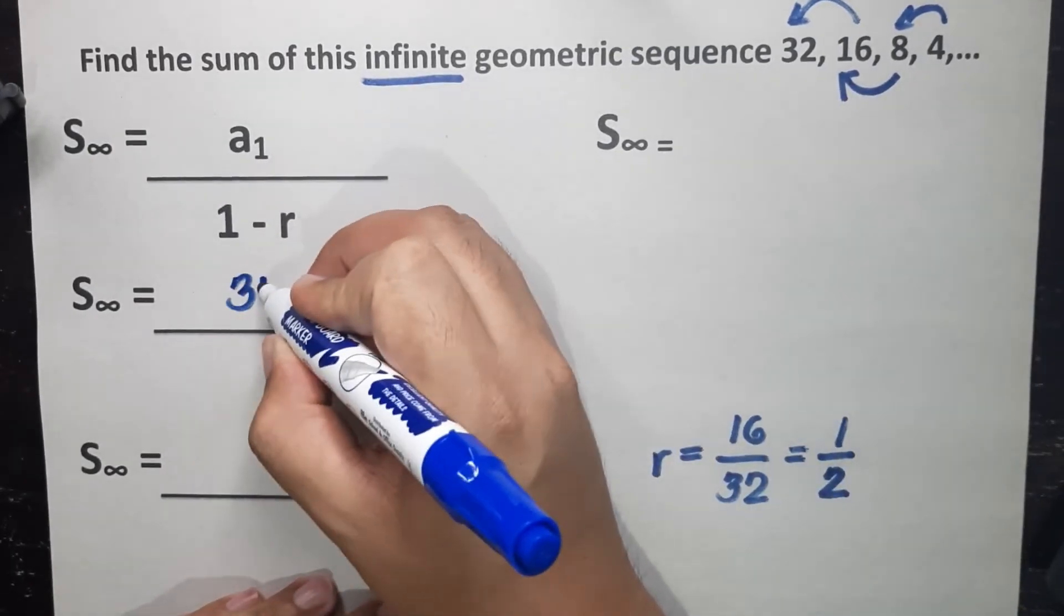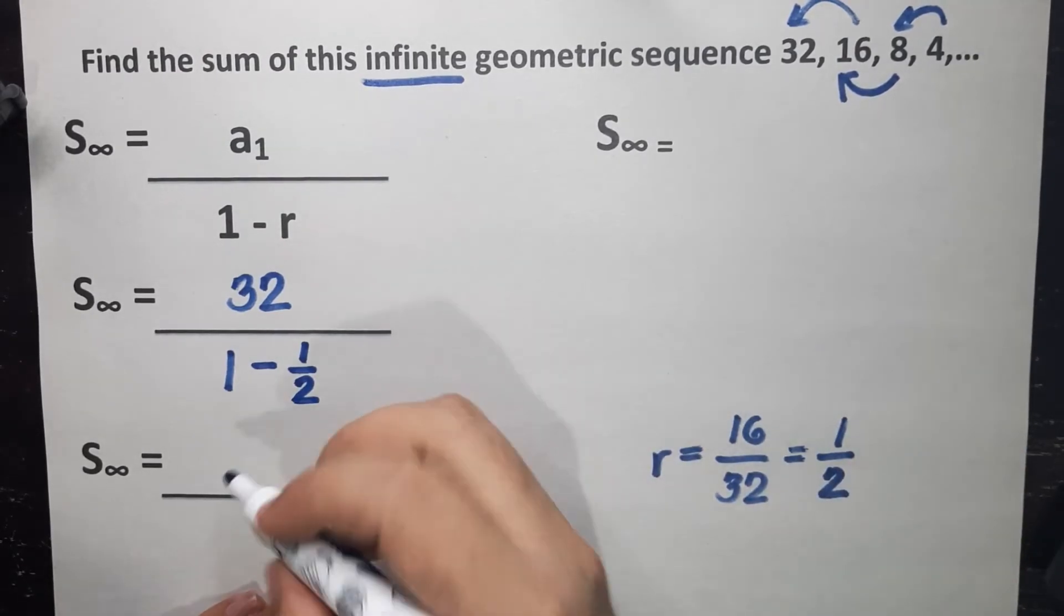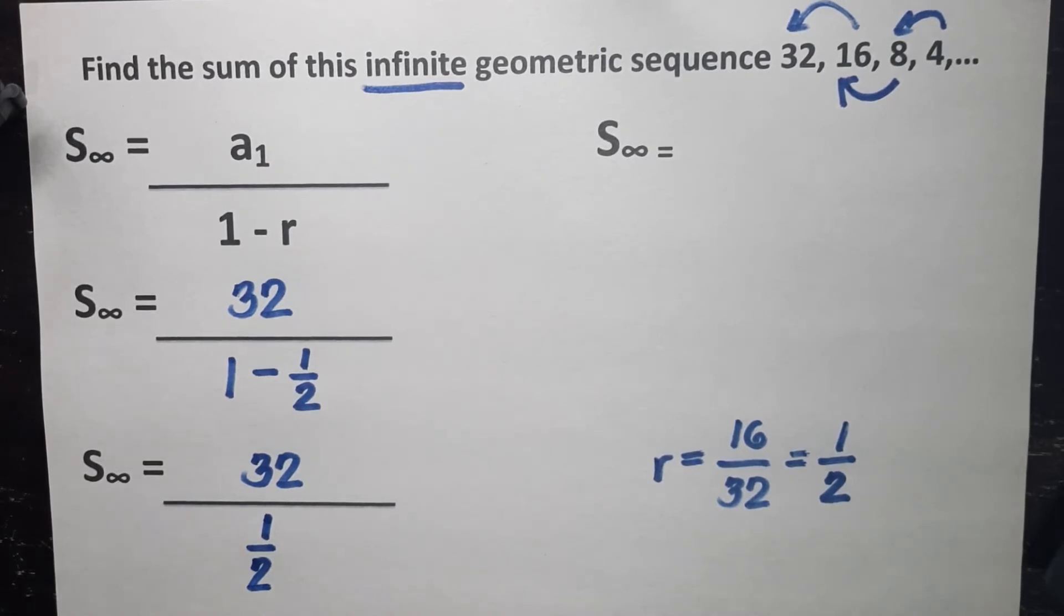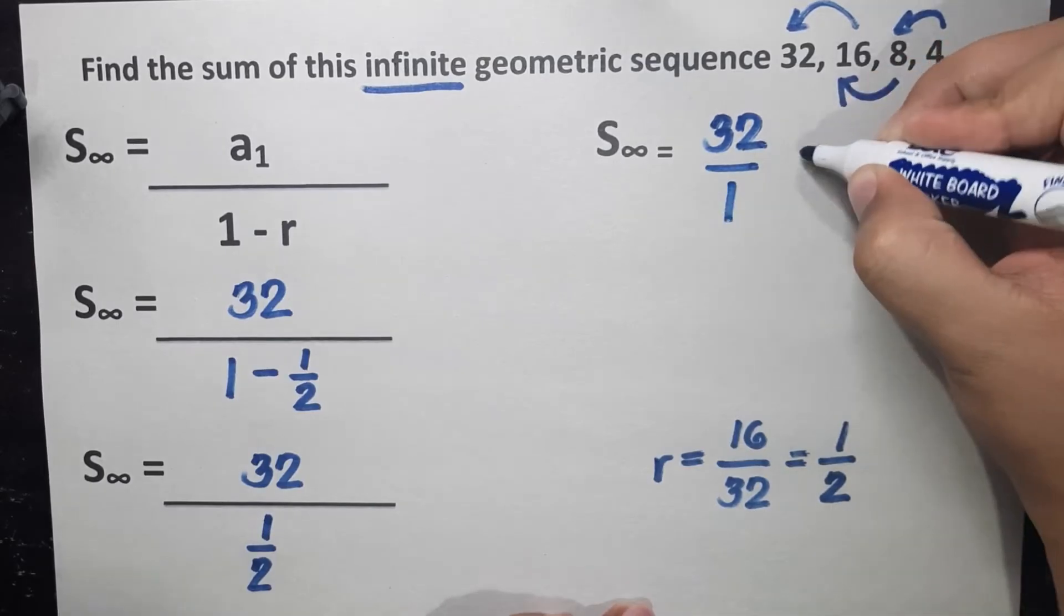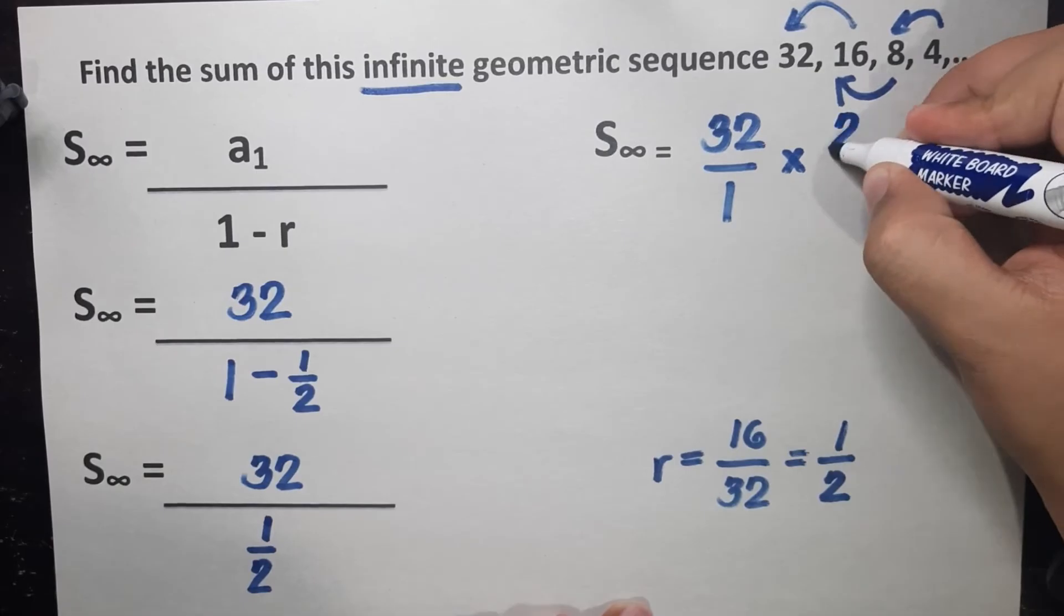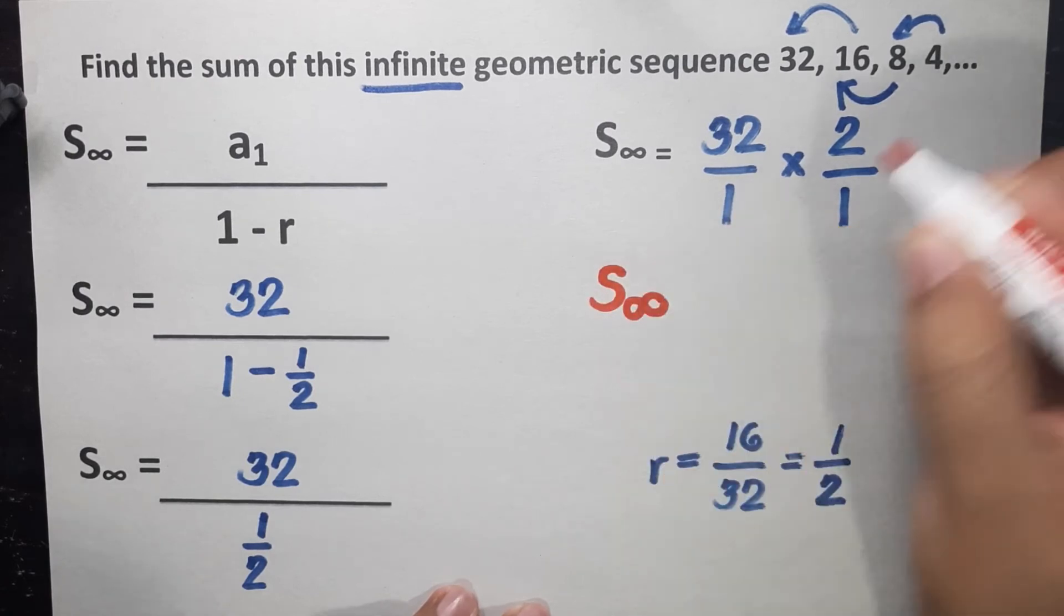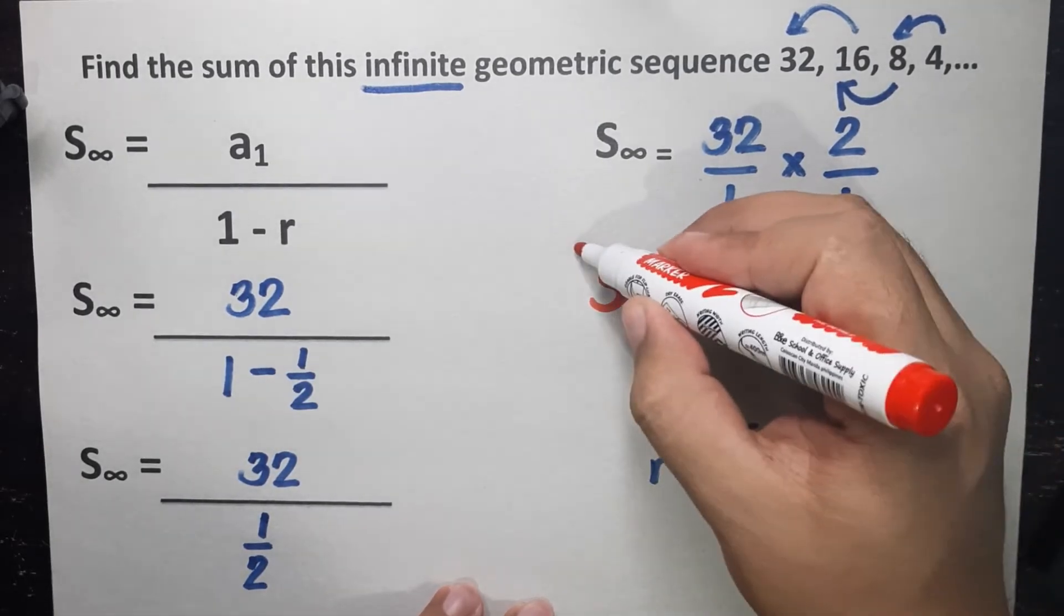a₁ is 32. 1 minus 1 half will give us 1 half. Now, we are here where we have to divide by fraction. So based on the knowledge that we know before, when it comes to dividing fraction, we have to multiply it by its reciprocal. So this will become 32 over 1 times. Get the reciprocal of 1 half, which is 2 over 1. And then apply the law of multiplication of fraction, which is numerator by numerator and denominator by denominator. So our sum of infinity for the given sequence is 32 times 2, 64 over 1 times 1, which is 1. So that's 64 over 1 or still 64.